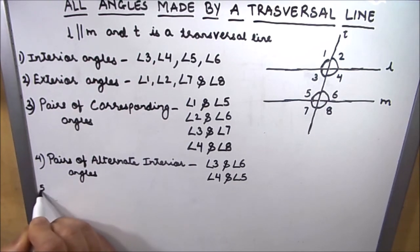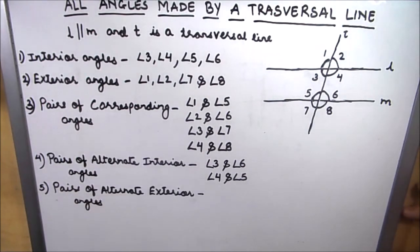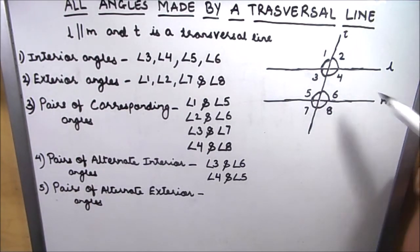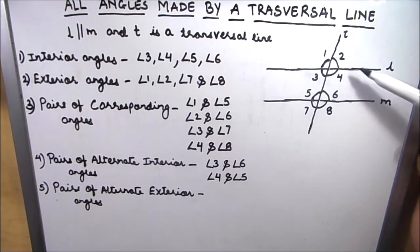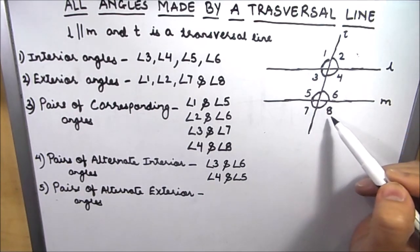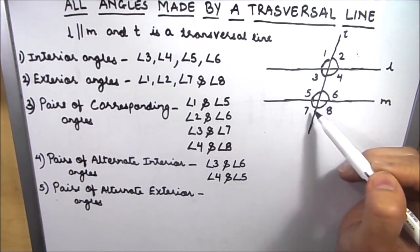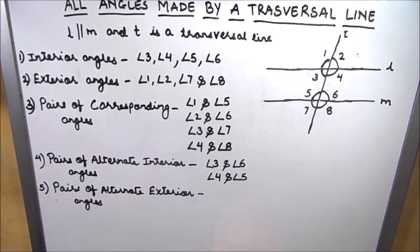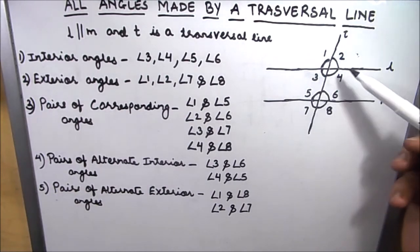There are also two pairs of alternate exterior angles. These are on the exterior side of the two parallel lines and on alternate sides of the transversal. The first pair is angle 1 and angle 8, and the second pair is angle 2 and angle 7.